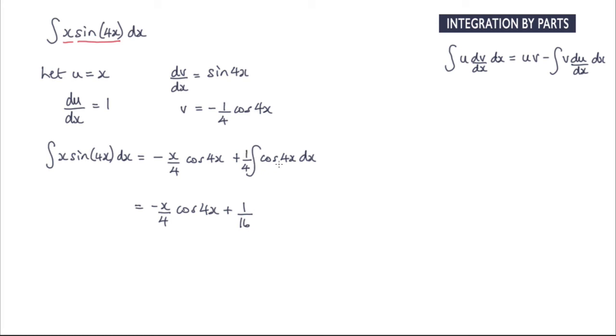So I've got the 1 over 16 and when I integrate this it will become sine of 4x and then all I need is the constant of integration.